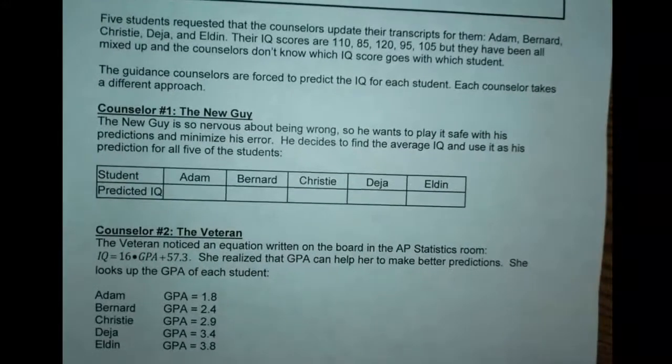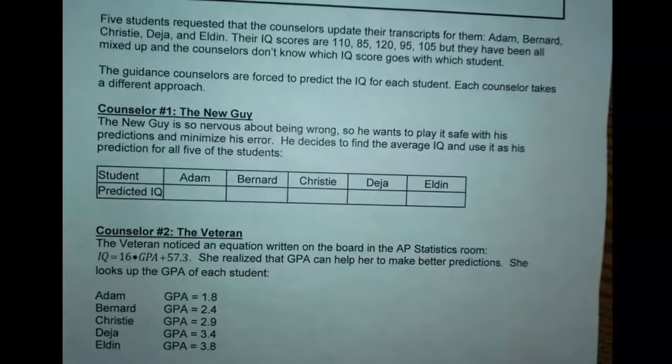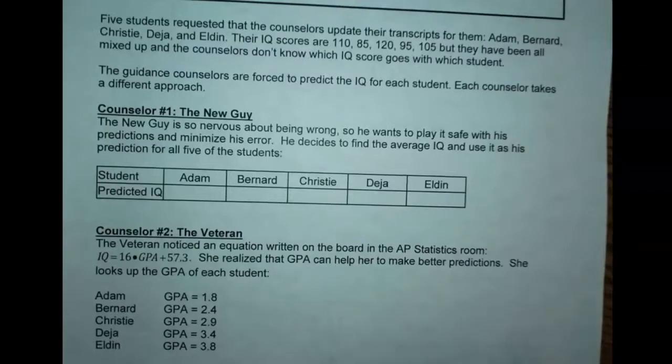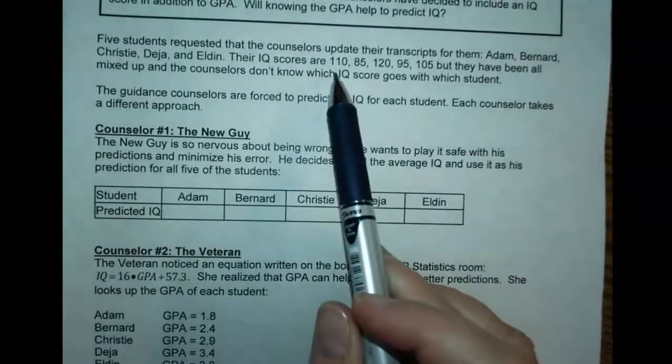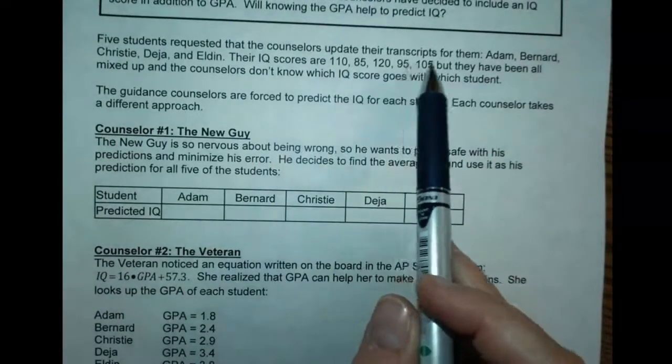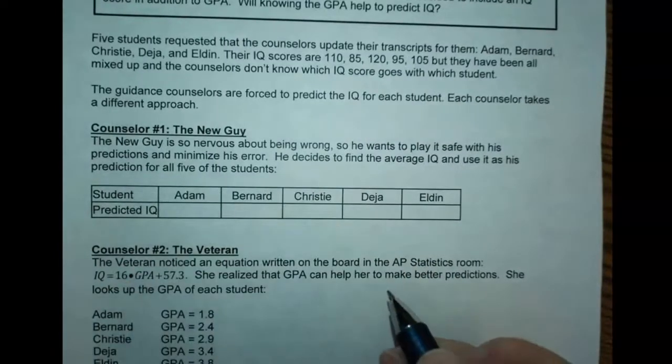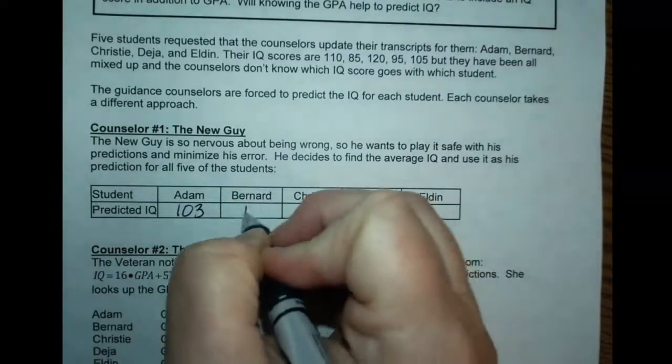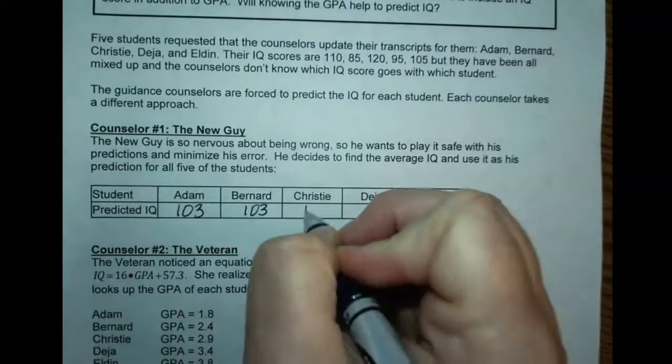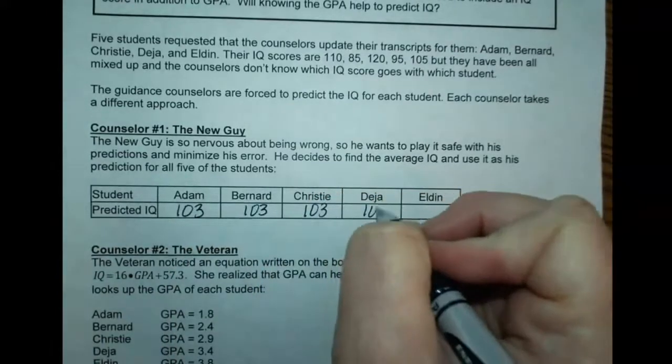The guidance counselors are forced to predict the IQ for each student. Each counselor takes a different approach. Counselor number one, the new guy, is so nervous about being wrong that he wants to play it safe with his prediction. He decides to find the average IQ score and use it as his prediction for all five students. When you add up all five IQ scores and divide by five, you come up with 103. So he's going to use 103 as the predicted IQ for each individual.